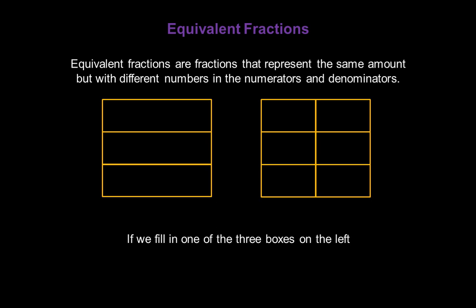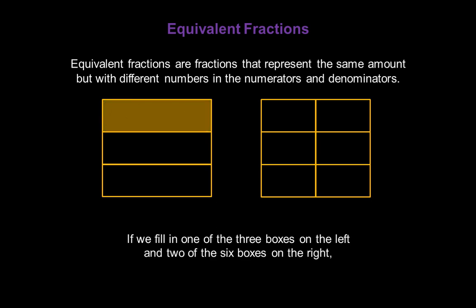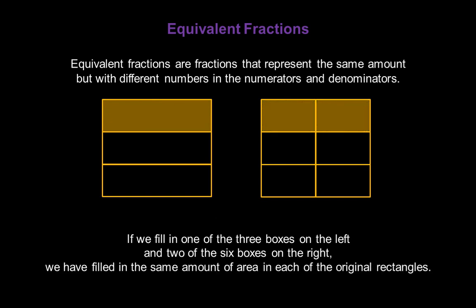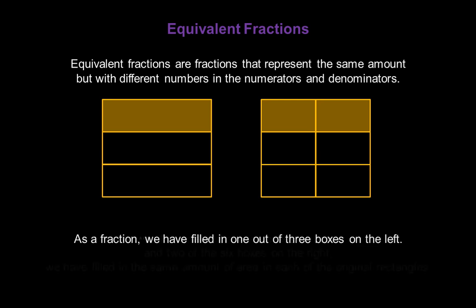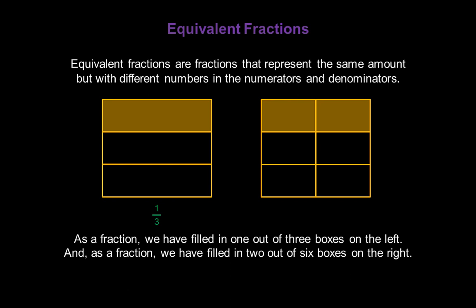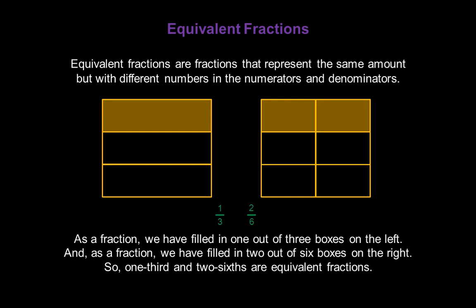Now if we fill in one of the three boxes on the left and two of the six boxes on the right, I'm sure you would agree we have filled in the same amount of area in each of the original sized rectangles. As a fraction, we have filled in one out of three boxes on the left, and two out of six boxes on the right. That means one third and two sixths are equivalent fractions.